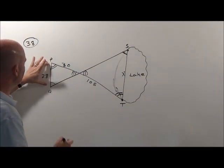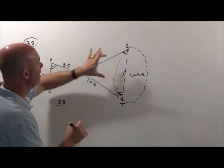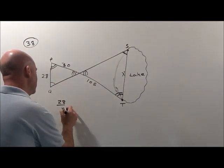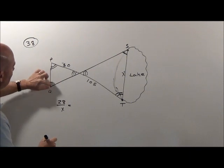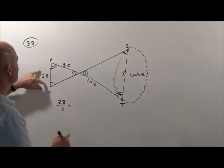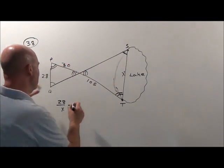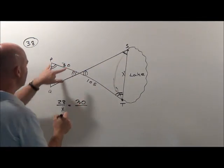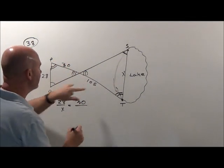So, I have 28 corresponds to the X. Because notice, the 28 was between the 1 and 2 markings. The X is between the 1 and 2 markings. So, 28 is to X as 30. Now, I know that 30 is going to go over top of 105.